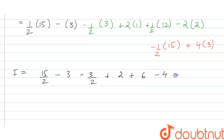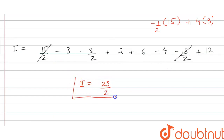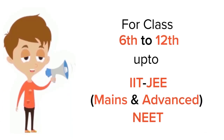On solving this, we have 15/2 minus 3 minus 3/2 plus 2 plus 6 minus 4 minus 15/2 plus 12. The value of I comes out to be 23/2. So 23/2 is the answer.